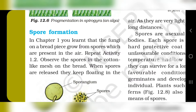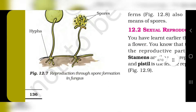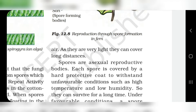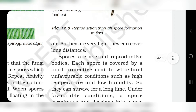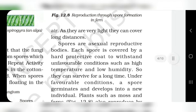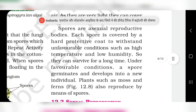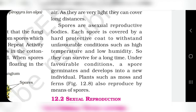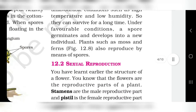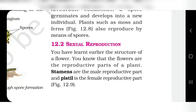Now, spore formation. Spores are released and keep floating in air as they are very light, and they cover a lot of distance. This spore has a hard protective coat, which allows it to survive in unfavorable conditions such as high temperature and low humidity for long periods. In favorable conditions, the spore germinates and develops into new individuals. Plants like moss or ferns reproduce by means of spores.